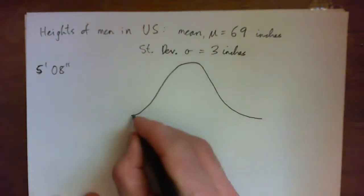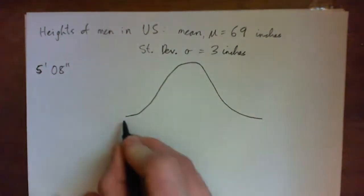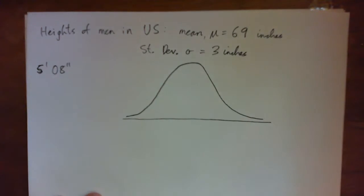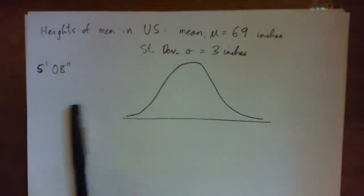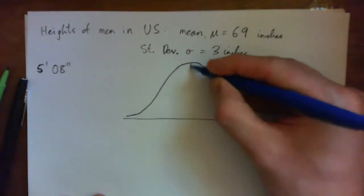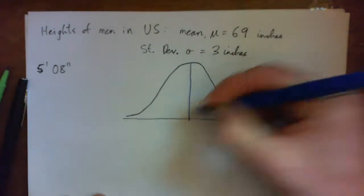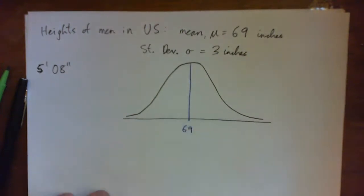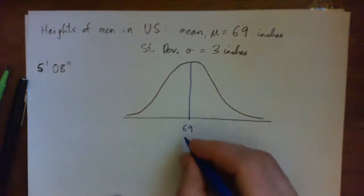I want everyone to draw a little normal curve, and then take the center of it and go down — that is 69 inches. The first thing we need to understand is that 69 inches is not 5 foot 9, because there are 12 inches in a foot.